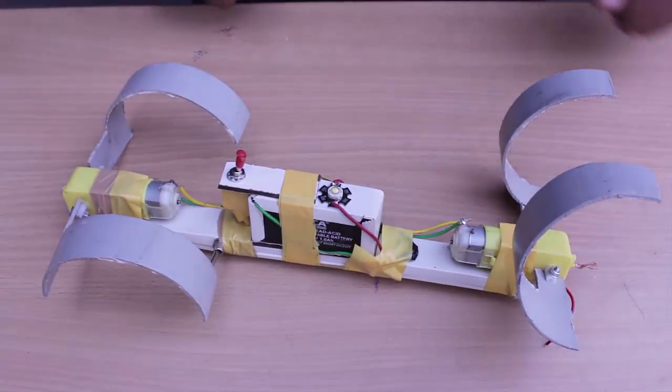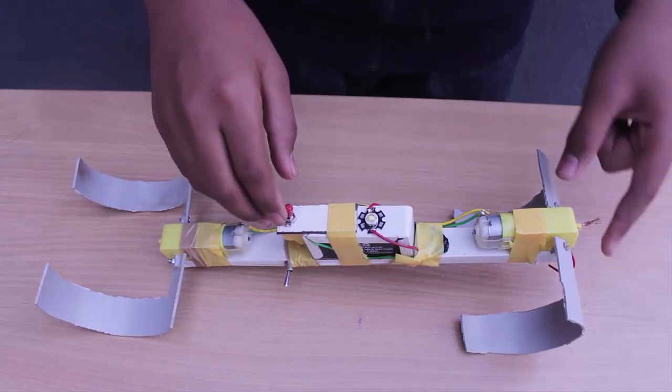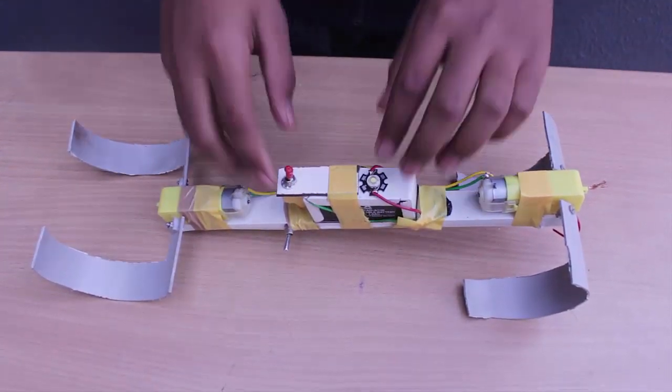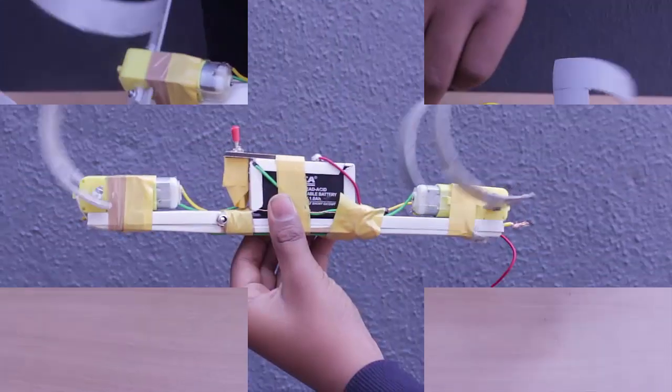Now keep all the semi-circular wheels in the same orientation and switch on the circuit. Here you can see the semi-circular wheels moving in the air.